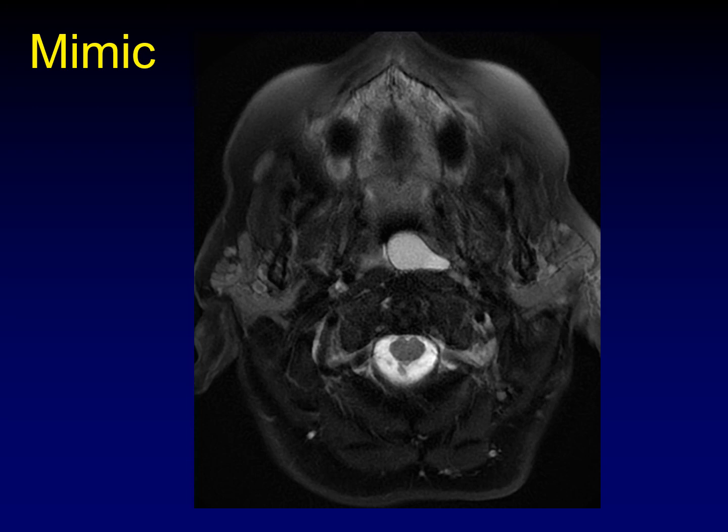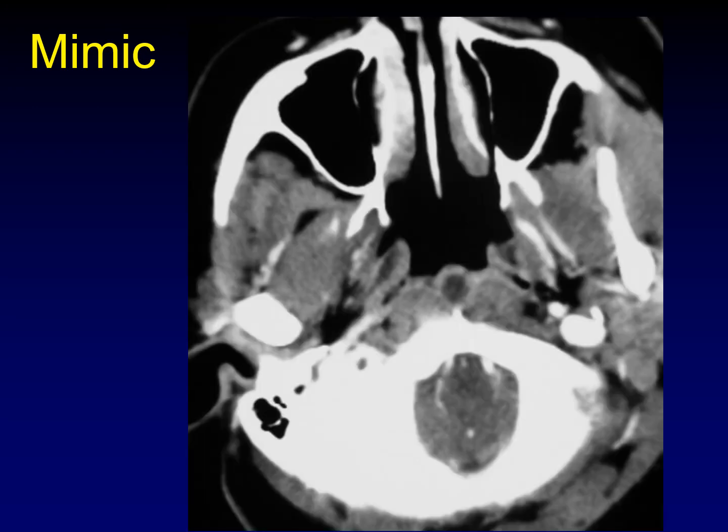Mucus retention cysts of the fossa of Rosenmüller are a very common incidental finding — if you look for them, you'll see them all the time. A classic cystic rounded lesion right in the center of the nasopharynx is a Tornwaldt cyst, an embryologic remnant associated with the notochord. We distinguish it from mucus retention cysts by location. Since both are almost always incidental findings, the distinction rarely causes clinical harm.